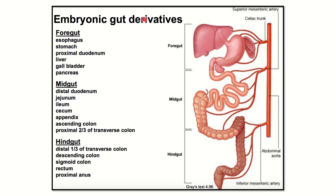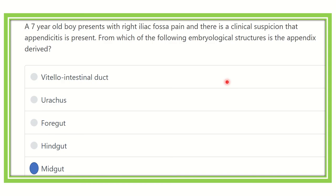Here is a summary of embryological gut derivatives. Foregut: esophagus, stomach, proximal duodenum, liver, gallbladder, and pancreas. Midgut: distal duodenum, jejunum, ileum, cecum, appendix, ascending colon, and proximal two-thirds of the transverse colon. Hindgut: distal one-third of the transverse colon, descending colon, sigmoid colon, rectum, and proximal anal canal. Therefore, the final answer is midgut — the appendix is derived from the midgut. Thank you all.